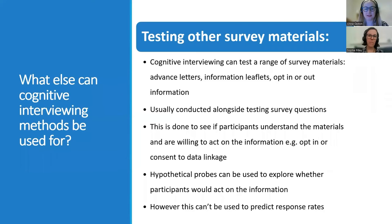What types of survey materials can be tested? A number of survey materials can be tested using cognitive interviewing methods. This can include advanced letters, information leaflets and opt-in or opt-out instructions. Usually the testing is done alongside testing of the survey questions. Advanced materials are tested at the start of the interview, which may mean that you can test fewer questions due to timing.